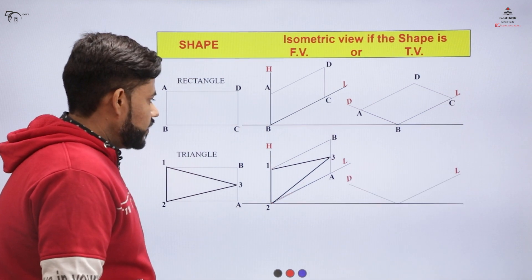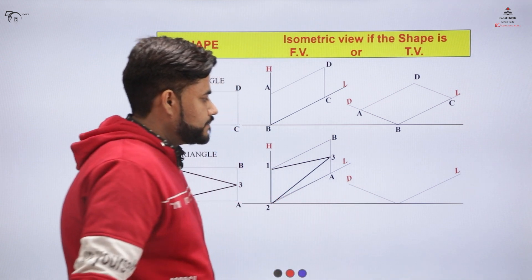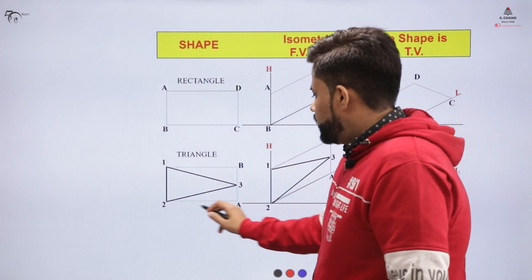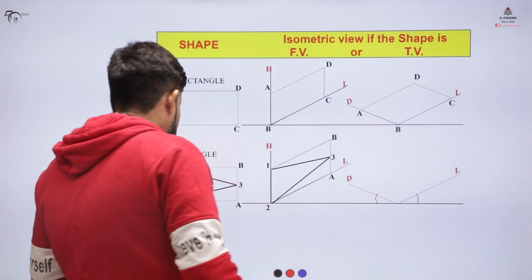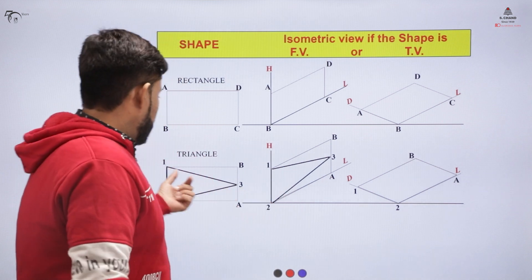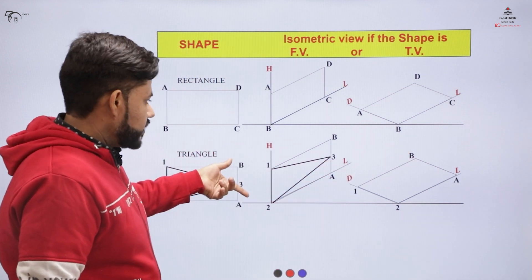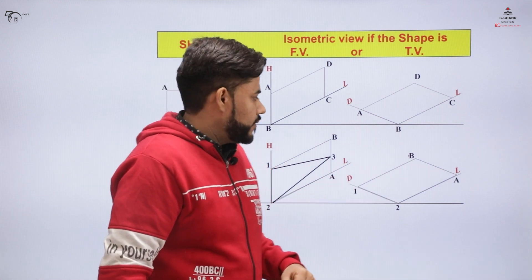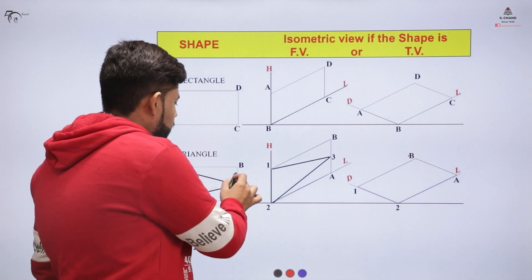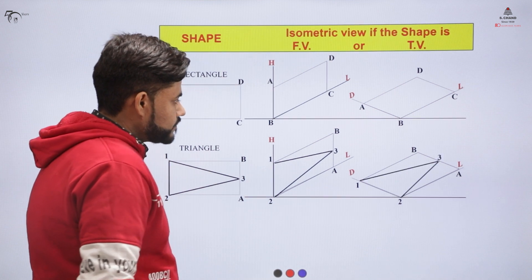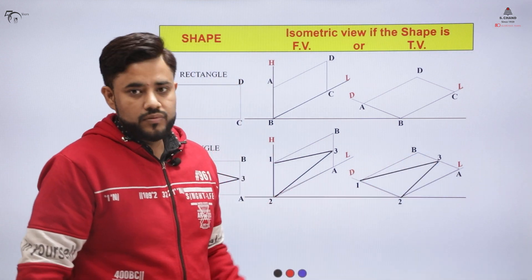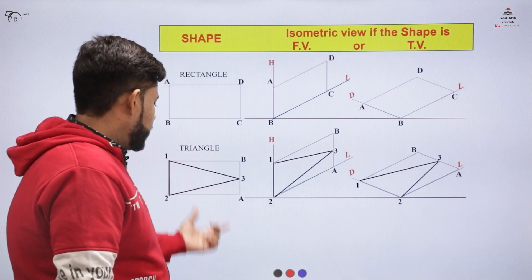For the top view of the triangle we use the x- and z-axes, both inclined at 30 degrees, and superimpose the bounding box on that surface. Point 2 remains common; we open the compass to 1 and mark it, then from 1 to B and from B to A. For the remaining point 3, we open the compass from B to 3 and mark it, then from A to 3 and mark it, and join all points to obtain the isometric top view of the triangle.